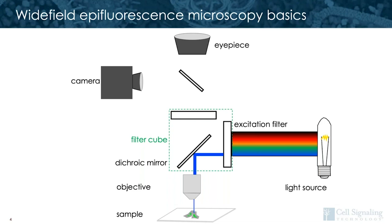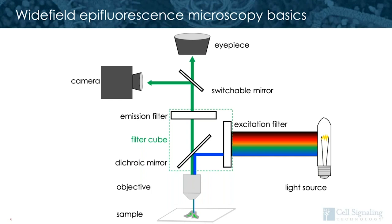This light is directed through the emission filter to a switchable mirror. From here, light can be directed to the eyepiece or to a camera. While imaging on an epifluorescent microscope is speedy, you're working with all of the light collected from the sample. There aren't many features here to eliminate out-of-focus light. And the filter sets are broad enough that some background and autofluorescence will likely be imaged if it exists in your sample.